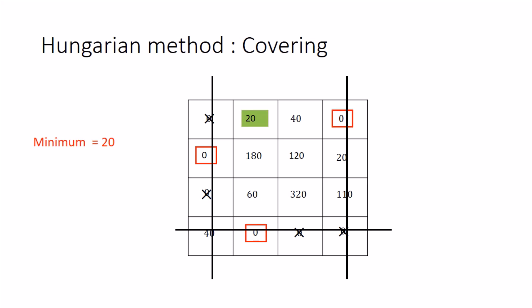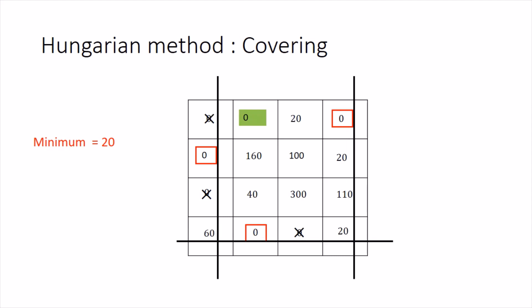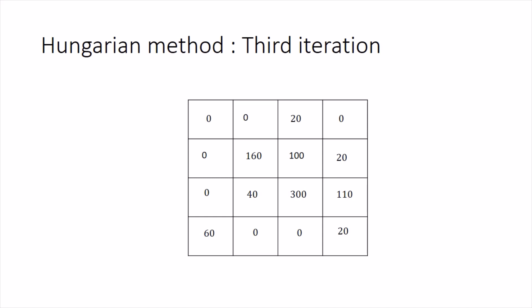Find the minimum of the uncovered entries, which is 20 this time. Subtract 20 from uncovered entries and add 20 to entries at the intersections. After the update, rewrite the matrix. In the second row there is exactly one zero so assign there, crossing zeros in the first column. Fourth row has two zeros and first row also has two zeros — a tie in rows — so break the tie column-wise: the third column has exactly one zero, so assign there, crossing out the zero in the last row.